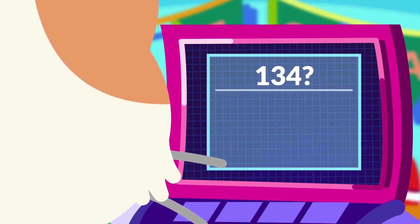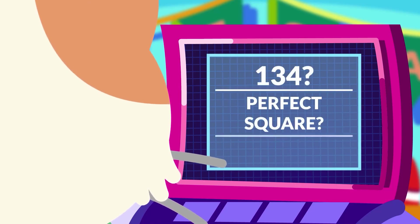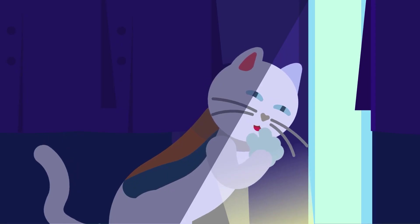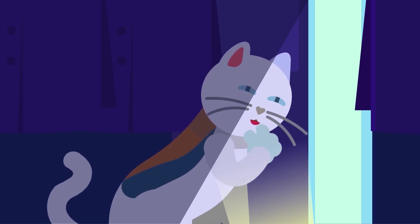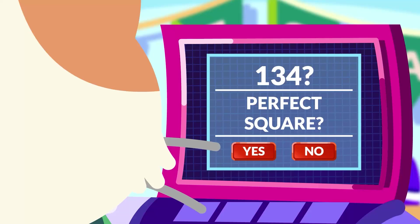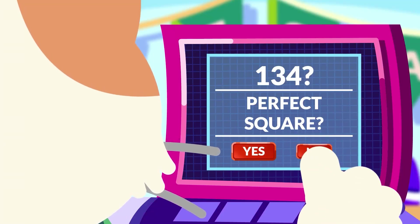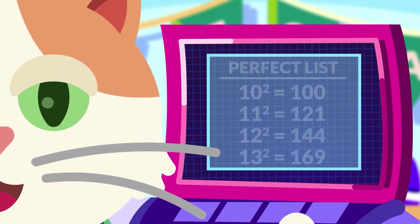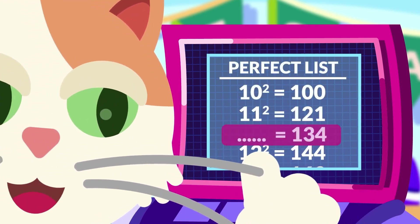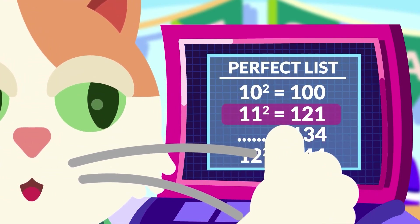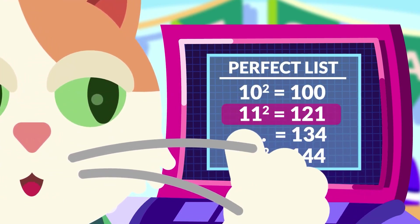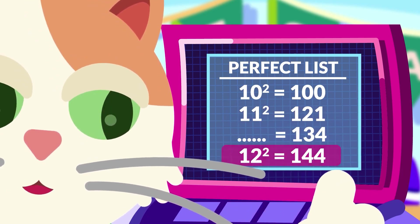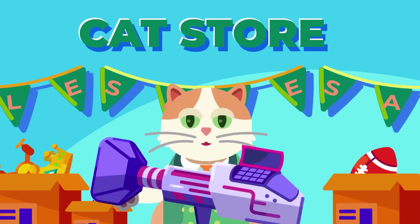Now, to determine whether a number — namely 134 — is a perfect square, check if it can be expressed as the product of two equal integers. In this case, 134 is not a perfect square, because it falls between two perfect squares: 121 from 11 squared and 144 from 12 squared, and therefore not an integer.